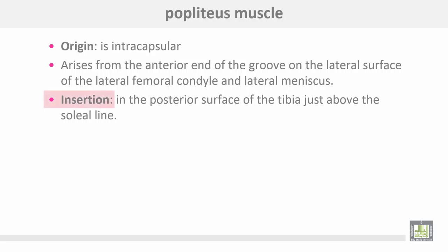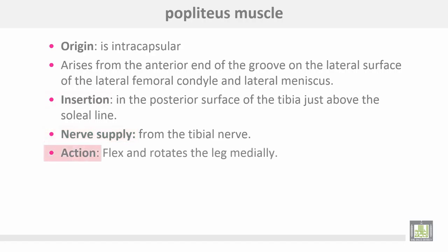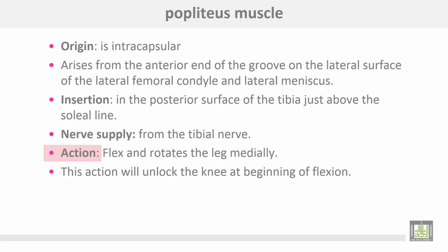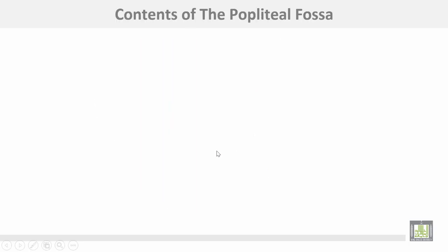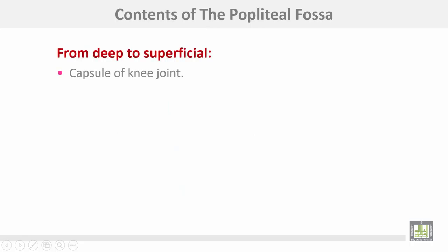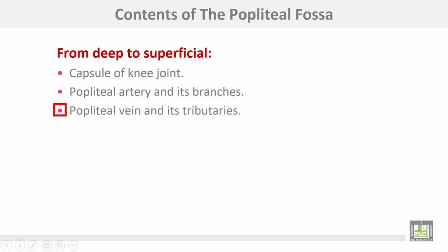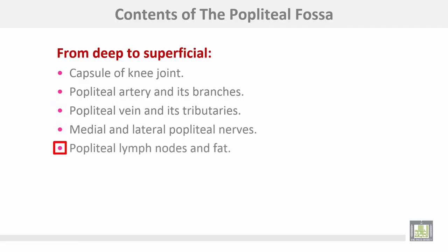The popliteus inserts on the posterior surface of the tibia just above the soleal line. The contents of the popliteal fossa from deep to superficial are: capsule of the knee joint, popliteal artery and its branches, popliteal vein and its tributaries, medial and lateral popliteal nerves, popliteal lymph nodes and fat, and the posterior cutaneous nerve of the thigh.